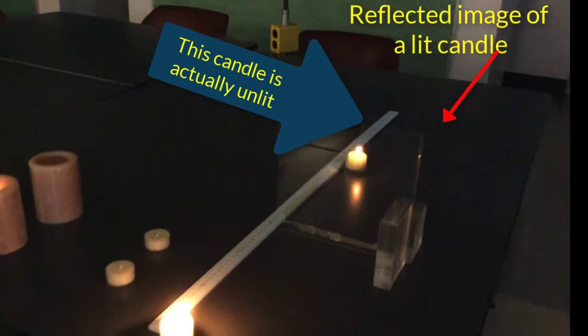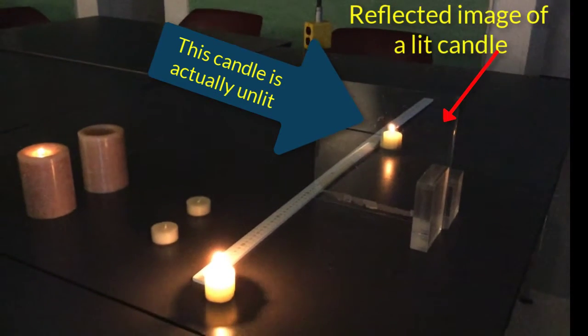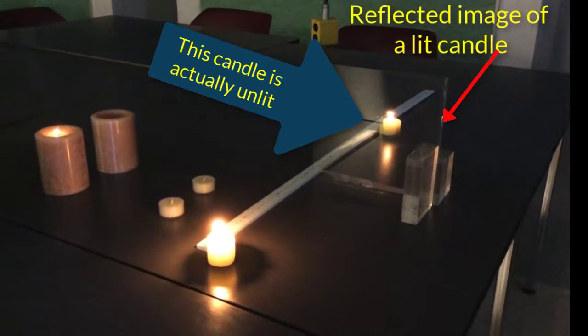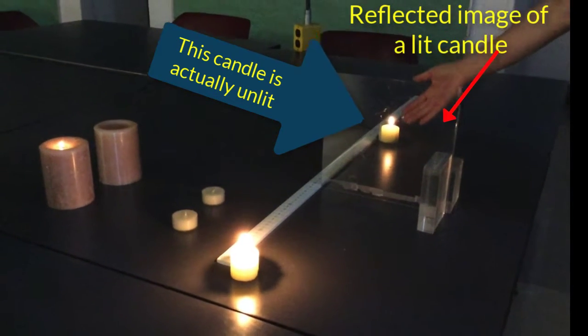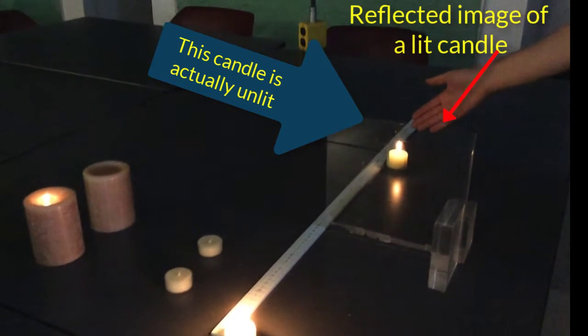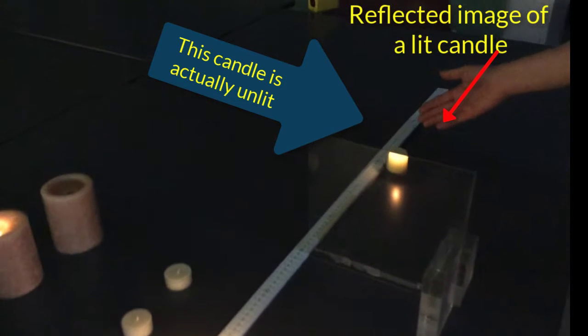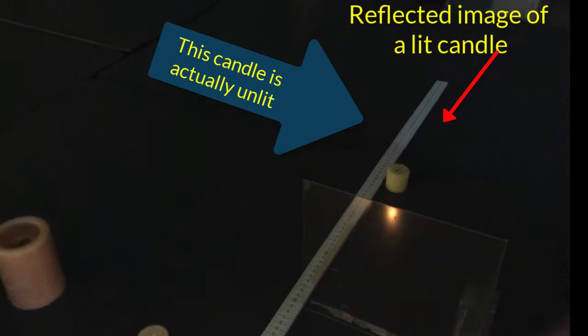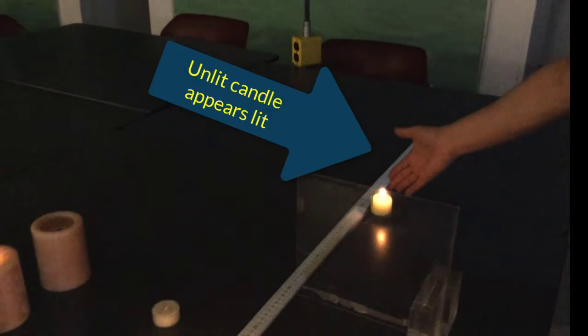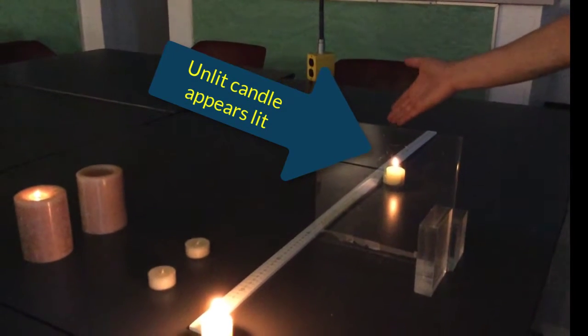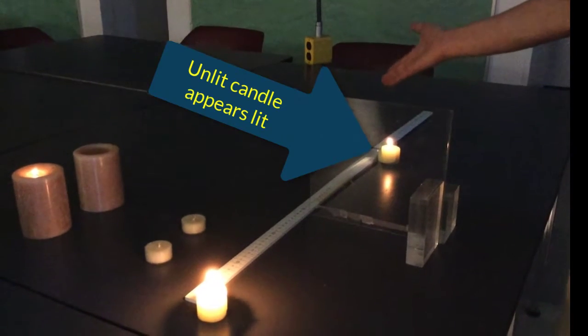And what I've done, I moved the candle on the left side. So when I look through the glass slab, the candle here appears lit. And again, when you do it with children, you ask the kids to go to the candle side. And then it will appear to them that the candle, which initially was not lit, will appear lit.